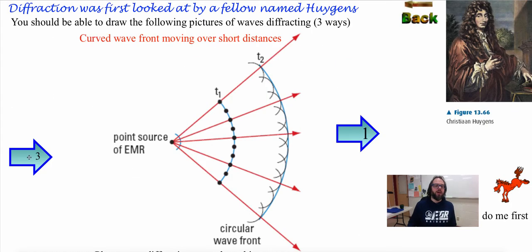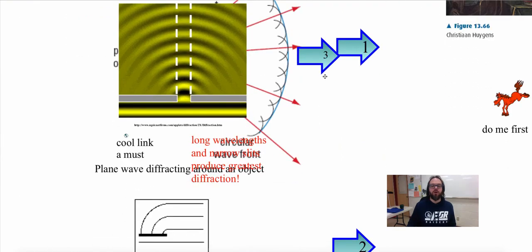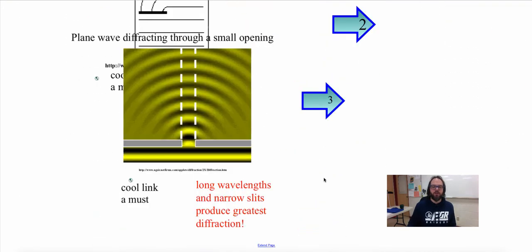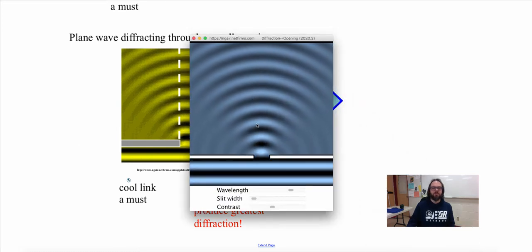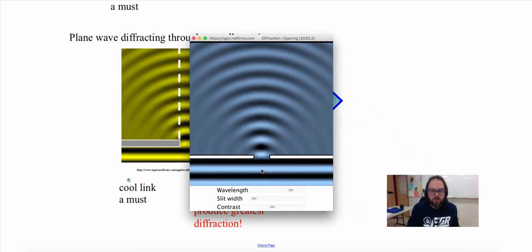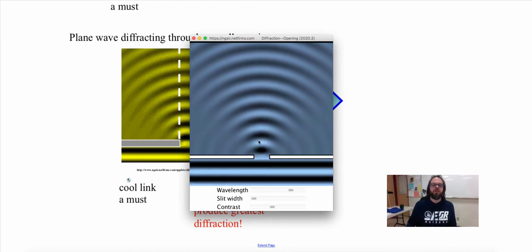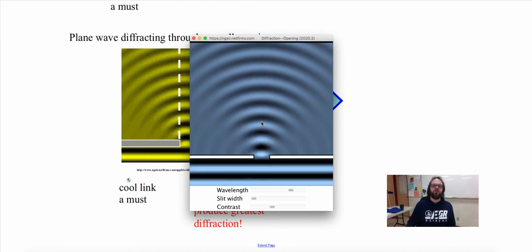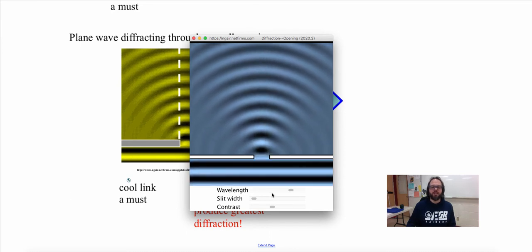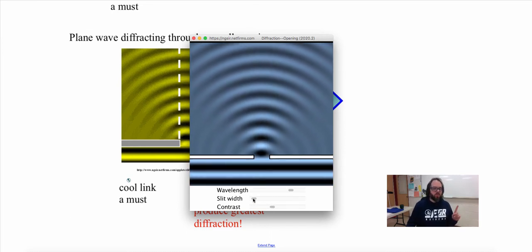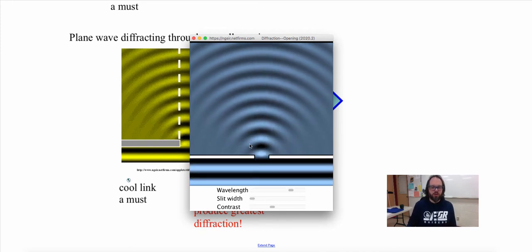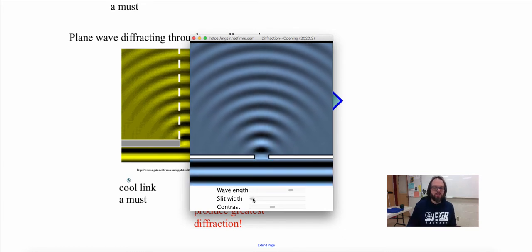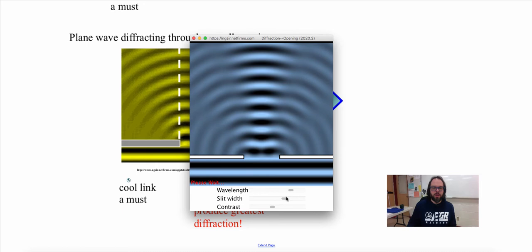Now let's look at what happens when waves go through a hole — through a slit. For long wavelengths through narrow slits, we come through and get a huge propagation — it starts curving because this becomes a point. The slit width can change and make some very interesting things. When I make the slit smaller, the wave is more round. But watch what happens when I make it a really, really big opening.